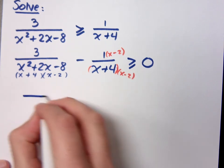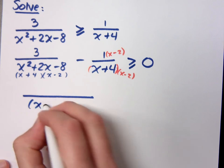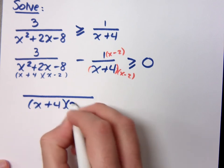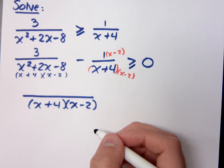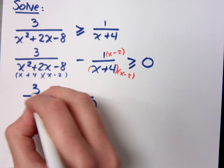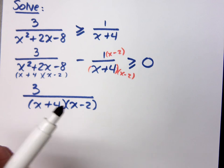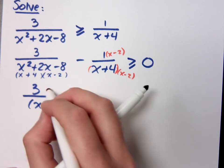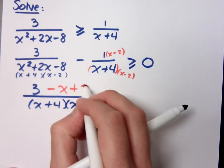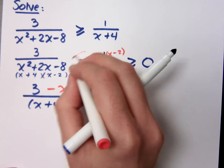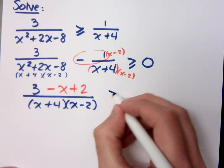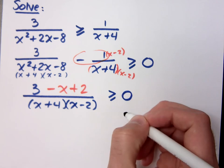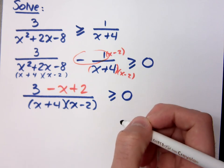So now I have one large fraction over x plus 4, x minus 2. What's in that numerator? 3 minus x plus 2. 3 minus x plus 2. Make sure that you do distribute this negative 1. And of course, this is still greater than or equal to 0. I haven't really done anything there.